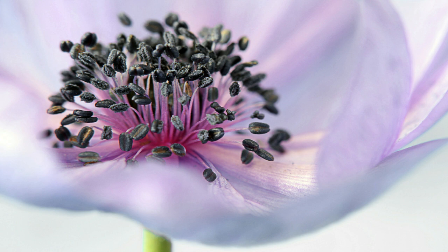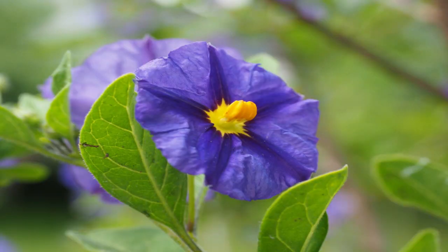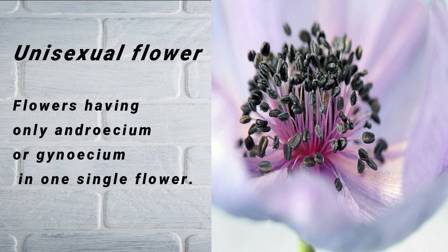In this picture, you can only see anthers — anther and filament — but you cannot see any gynoecium. So it means it's only a male type flower, meaning there is no female reproductive part in this flower. It is made up of anthers only.